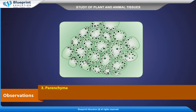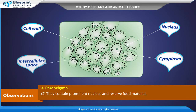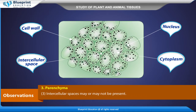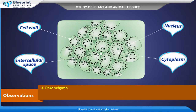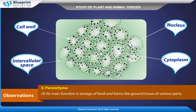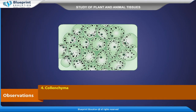Parenchyma: Cells are isodiametric, thin-walled and living. They contain a prominent nucleus and reserve food material. Intercellular spaces may or may not be present. Its main function is storage of food, and it forms the ground tissue of various parts.